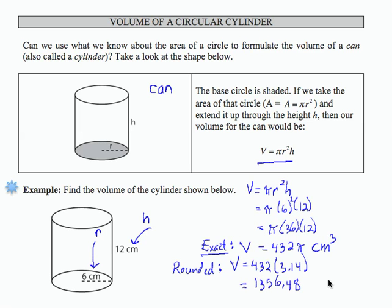Let's round to the nearest hundredths centimeters cubed. This is the rounded form for the volume of the cylinder.